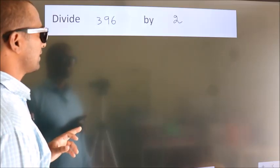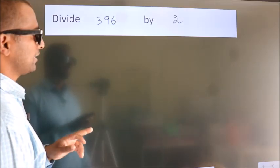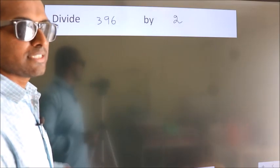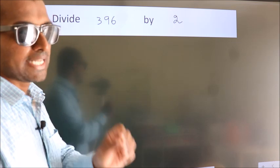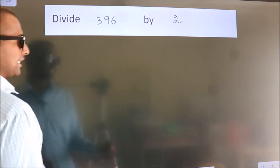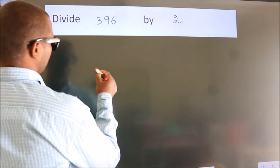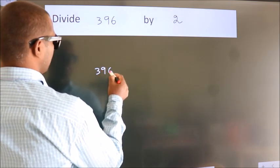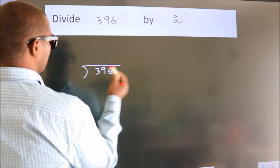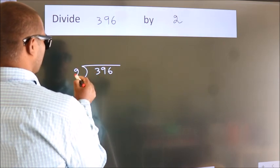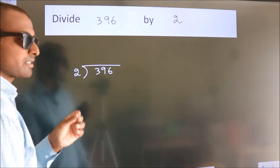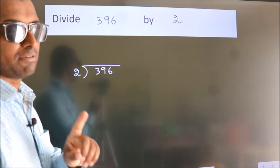Divide 396 by 2. To do this division, we should frame it in this way: 396 here, 2 here. This is your step 1.